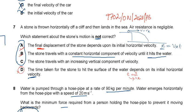Since we need to mark the incorrect option, and A is correct, A is the wrong answer to select — it is not the incorrect statement.